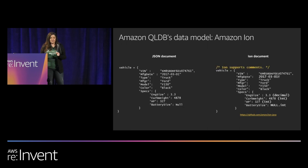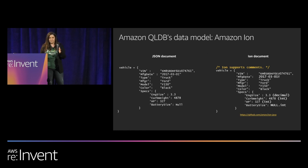Let's touch briefly on the Amazon QLDB data model called Ion. Ion is a richly typed format — it supports comments and lets you specify number types, like a decimal number, which is really important when parsing JSON and mapping to the right number type. For null values, you can specify the data type as well. We've added new data types including timestamps and other attributes. Ion has been open-sourced, so if you want to use it even outside of QLDB, please feel free to download and play around with it.